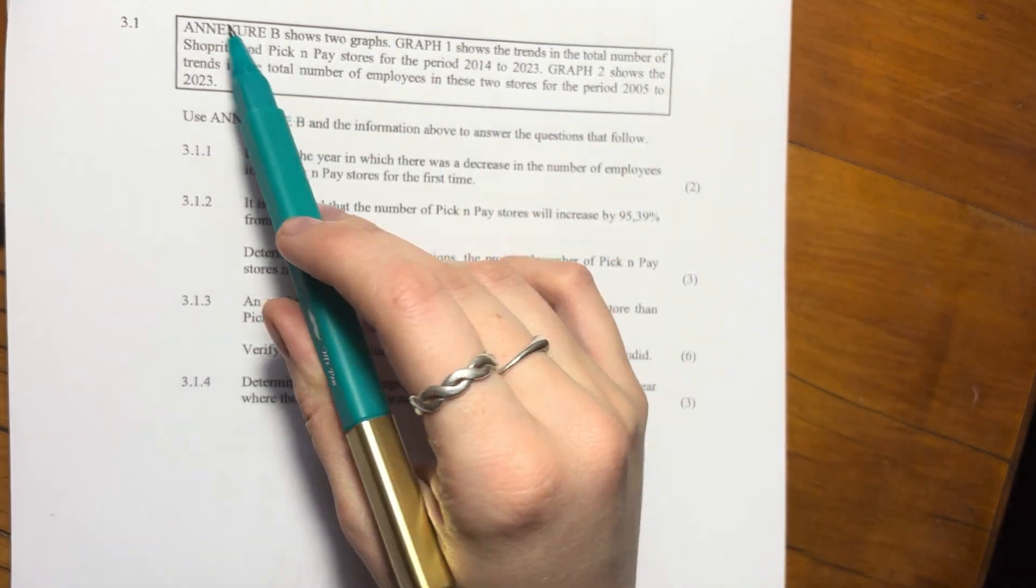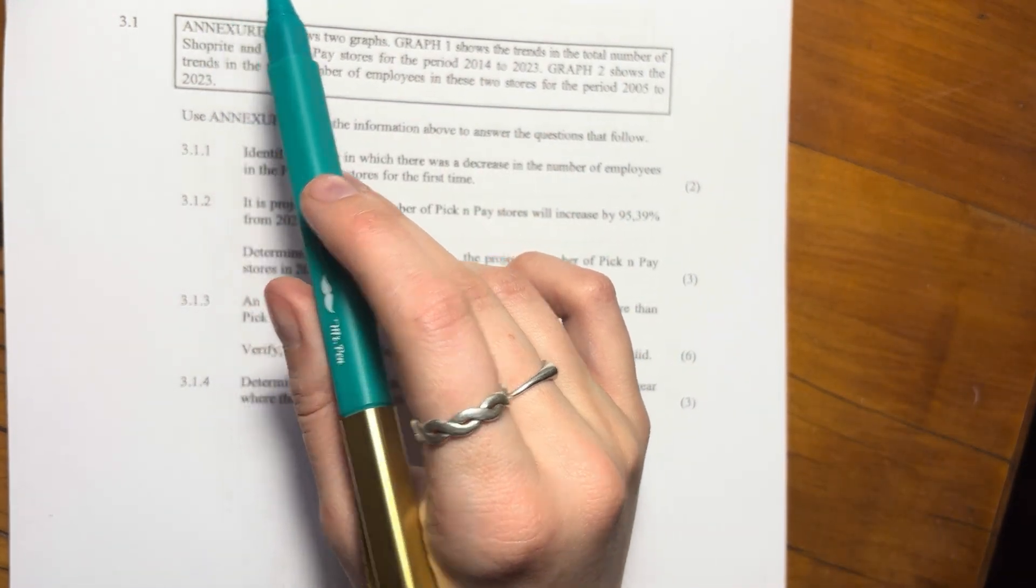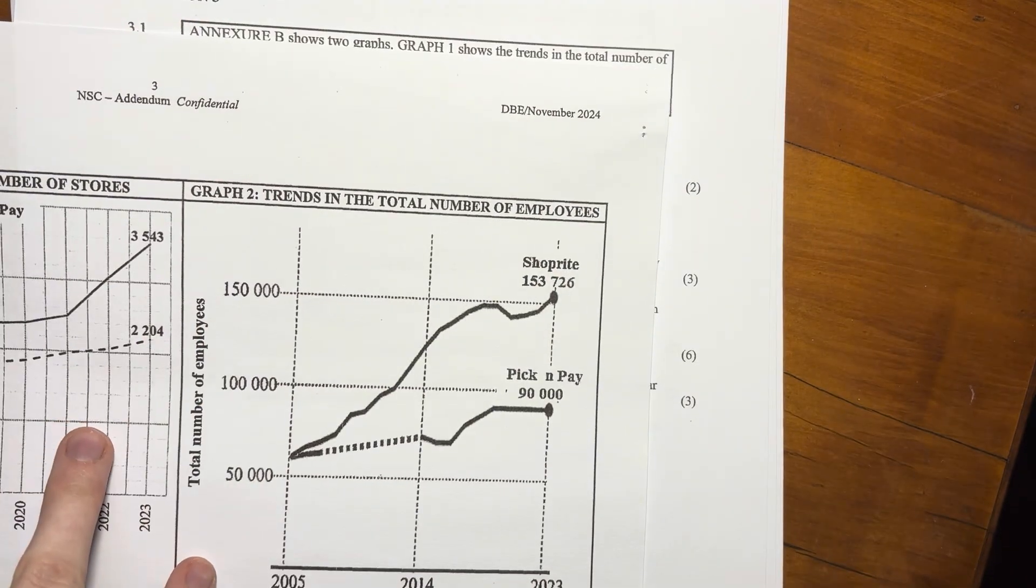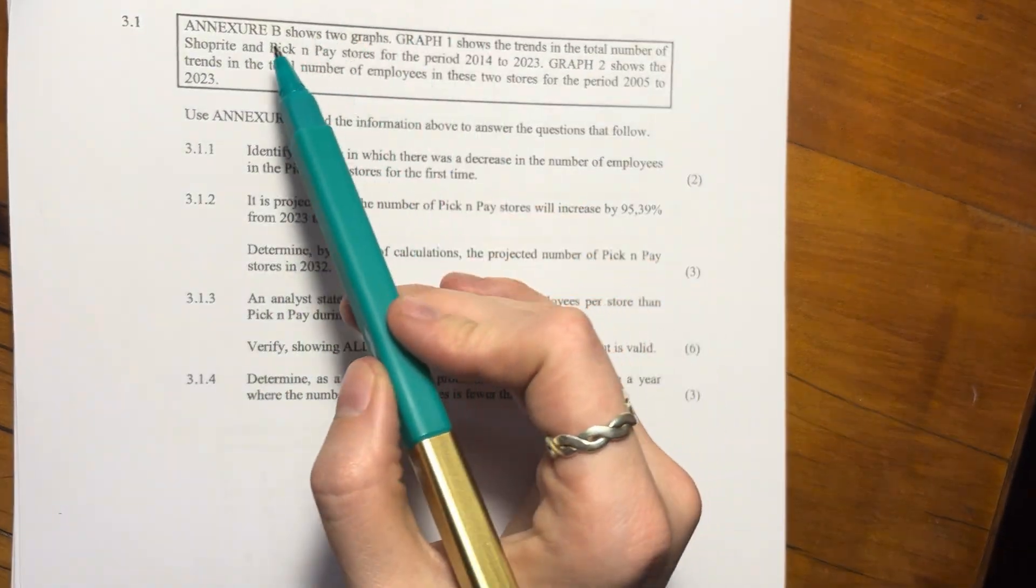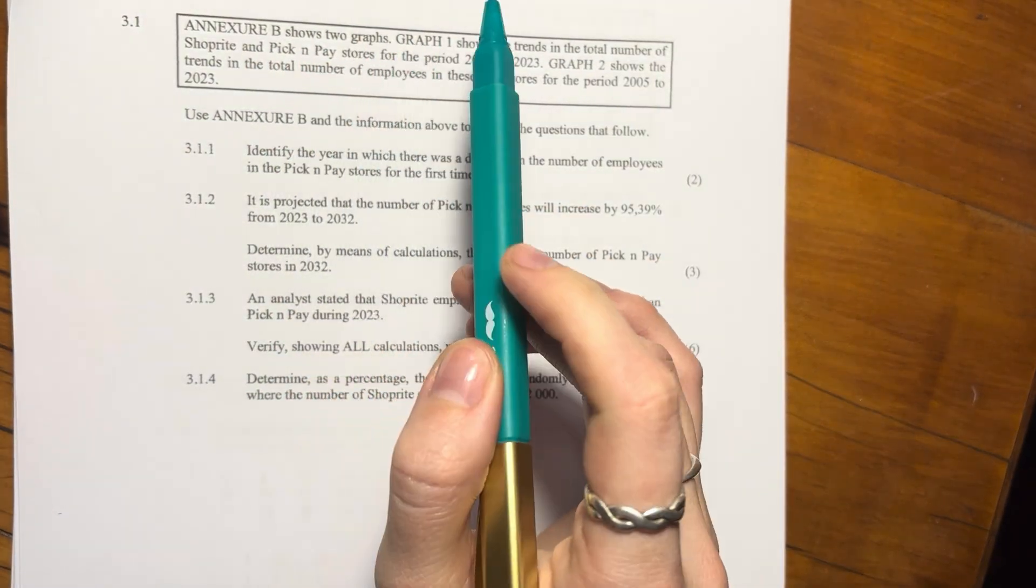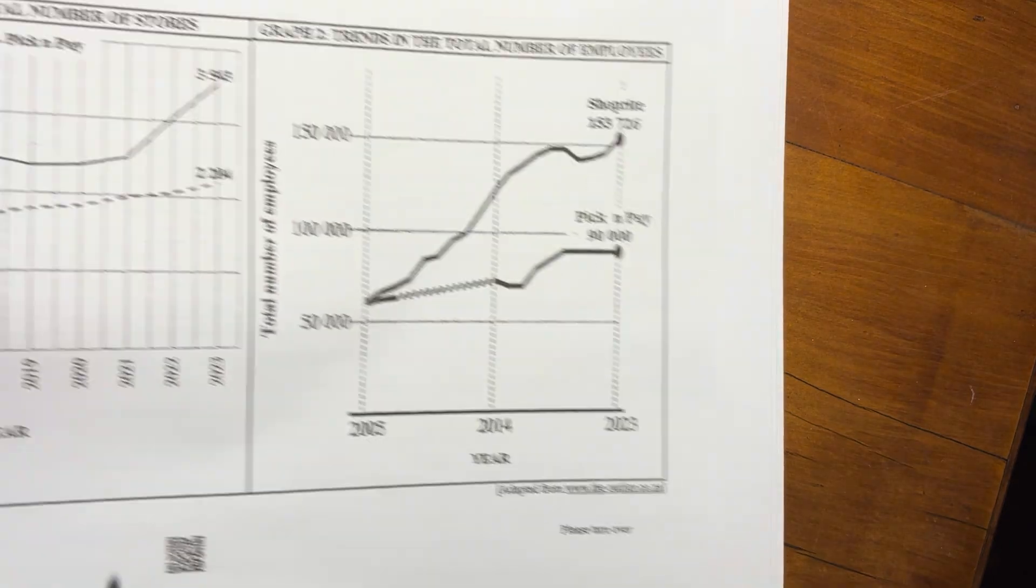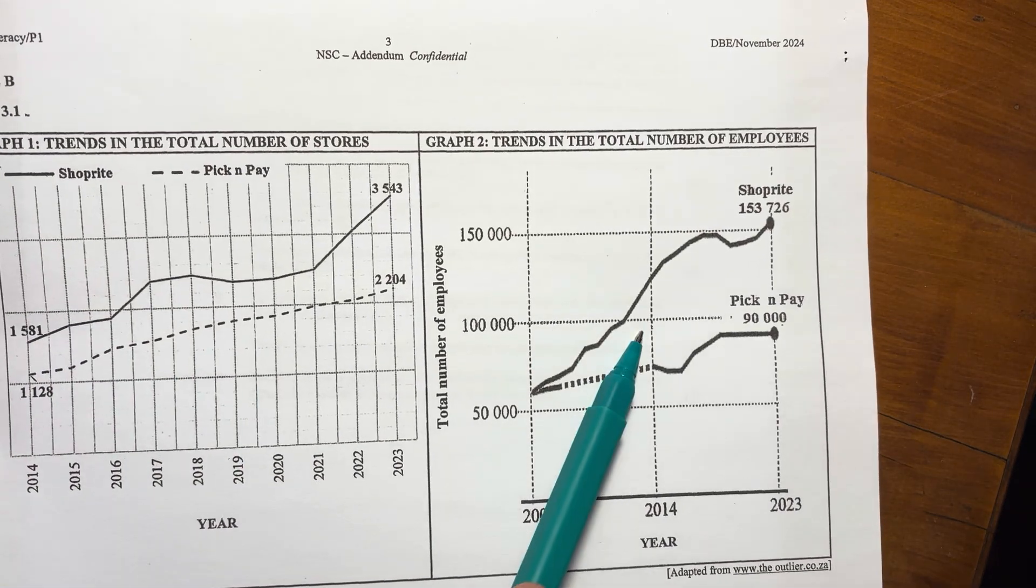All right, let's look at question three. Question three requires us to have Annex B, so please make sure that you have that while we're working. So it says, Annex B shows two graphs, okay, graph one and graph two.